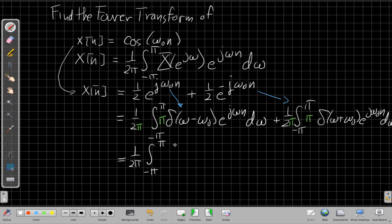Right, the sum of the integrals is the integral of the sums. So I have π·δ(ω - ω₀) and π·δ(ω + ω₀), the whole thing times e^(jωn)dω.